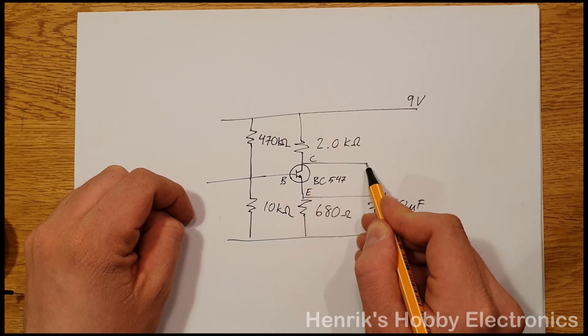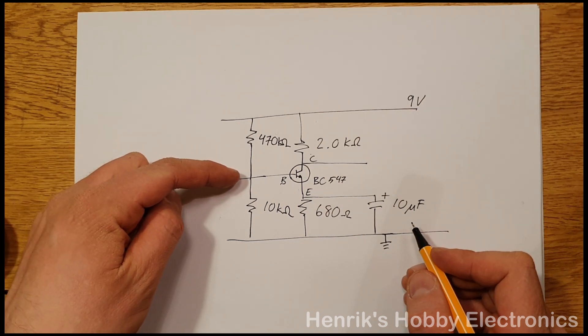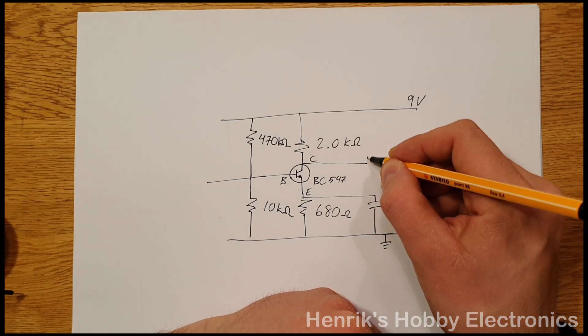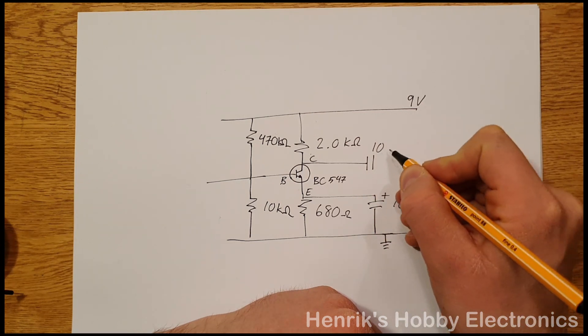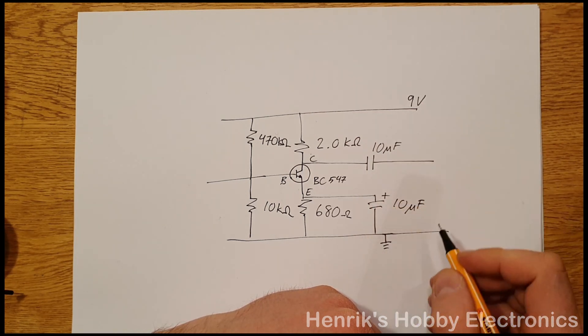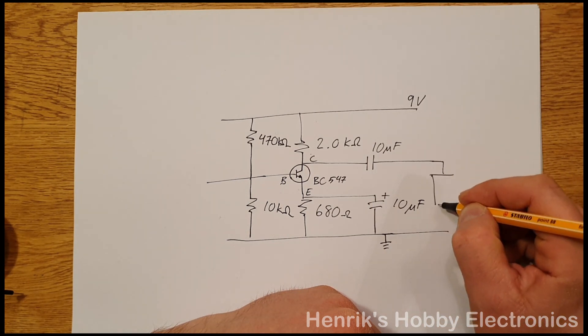So this is where we'll take the output. But we want to get rid of the DC component that is introduced by this biasing, and therefore we have a capacitor here as well. I'll use also again a 10 microfarad capacitor here. So here we have the output and then this we can connect to the loudspeaker.